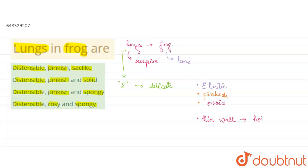So if we see here, we can say that they are distensible first of all, so distensible is there in all the options. They are not rosy, so this option will be wrong, and they are not actually solid or spongy. Hence we can say that these two options are also wrong.